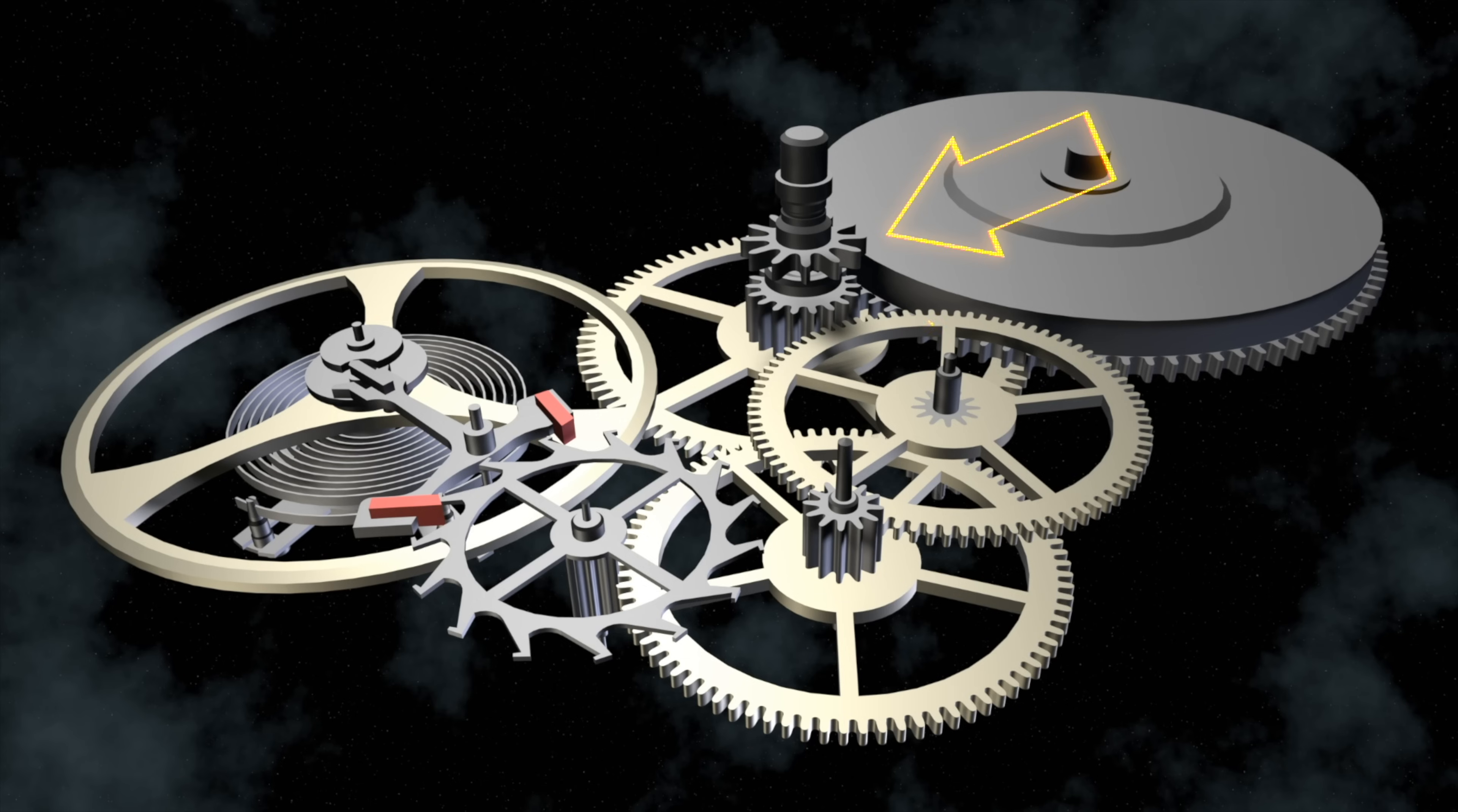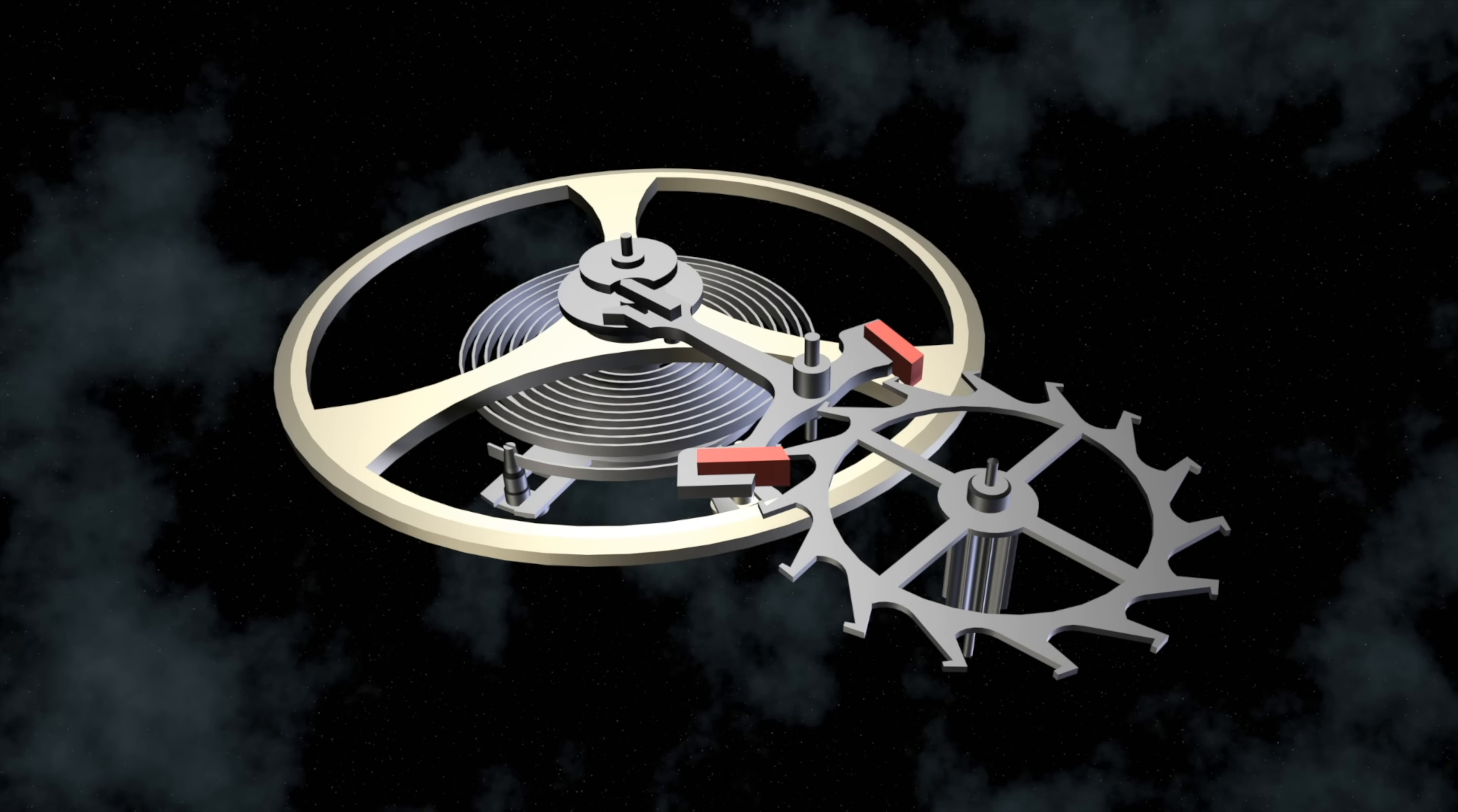So to recap at this point, we have energy stored in the barrel which is traveling through gears we call the going train, which now leads us to this funky looking wheel, the escape wheel, which dances all day long with the pallet fork which swings left and right.